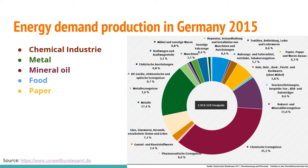Now looking at how energy is used today, using German statistics from 2015 as a well-documented example with diverse production. Germany is not absolutely typical but has similarities with countries like China, Japan, and the United States. Germany has a lot of engineering products and a very diverse industrial base.